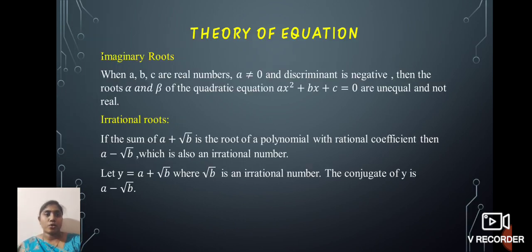First of all, Theory of Equation. Imaginary Roots. When A, B, C are real numbers, A not equal to 0 and discriminant is negative, then the roots alpha and beta of the quadratic equation Ax² + Bx + C = 0 are unequal and not real.